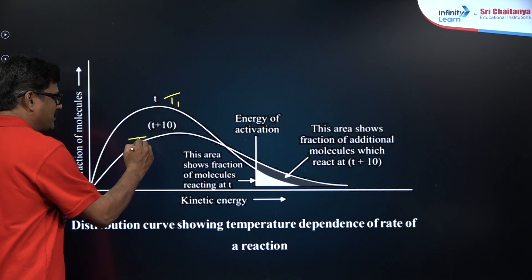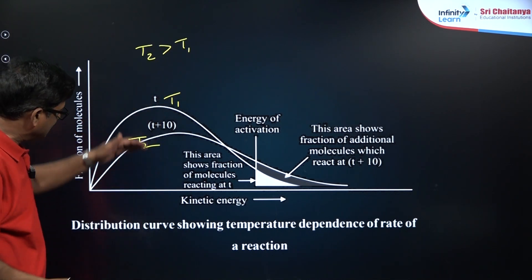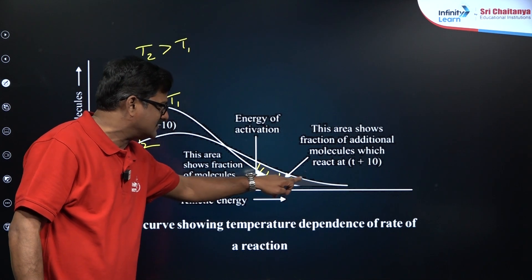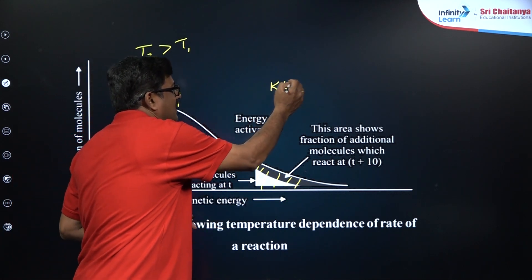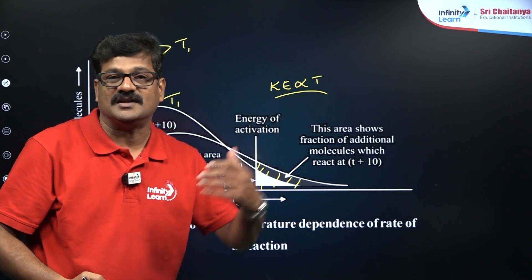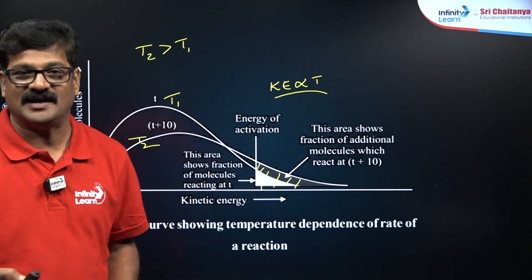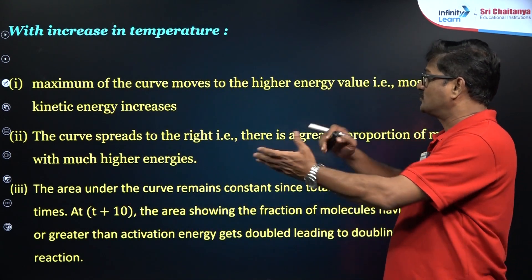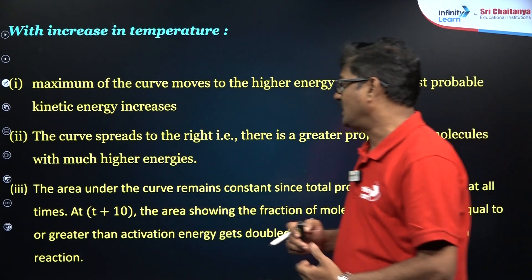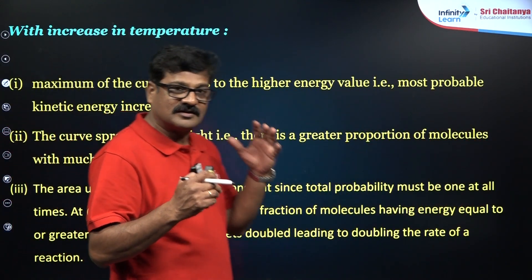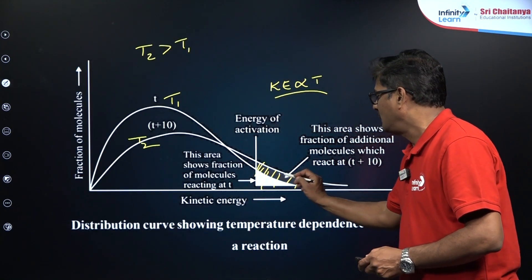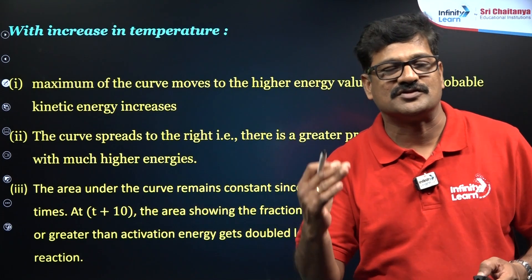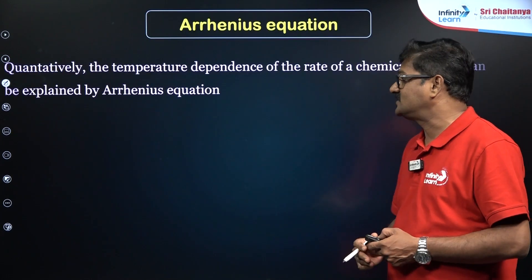When you change the temperature — say T1 and T2, where T2 is greater than T1 — the graph becomes flattened and the fraction of molecules with high kinetic energy increases. Since kinetic energy is directly proportional to temperature, as kinetic energy increases, the effective collision number increases and the rate of reaction increases. With increasing temperature, the maximum of the curve moves to a higher kinetic energy value, the curve spreads to the right, and the area under the curve on the right represents the fraction of molecules having higher kinetic energy. This is the key feature of the molecular kinetic energy distribution curve and is explained by the Arrhenius equation.